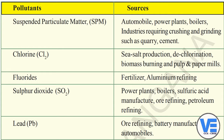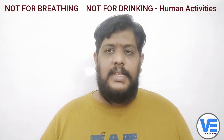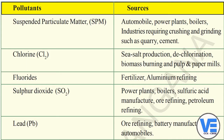Next is fluorides. Fluorides are released from fertilizers and aluminum refining, where refining of aluminum leads to fluoride formation that is added to the air. After that, lead is released from oil refining, battery manufacturing, and automobiles — this lead is also released into the air and pollutes it.